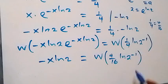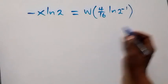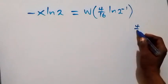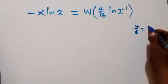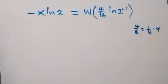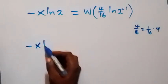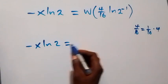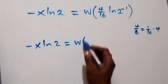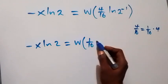If you are enjoying this class, give a thumbs up and please subscribe for more videos. Thank you. Now here we can rewrite 4 over 16 as 1 over 16 times 4, so this becomes minus x·ln2 equals W(1 over 16 times 4 · ln2 raised to power minus 1).